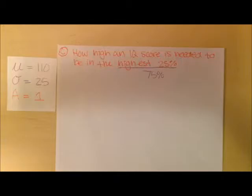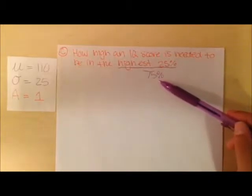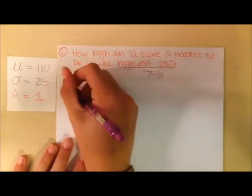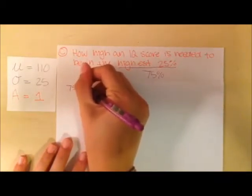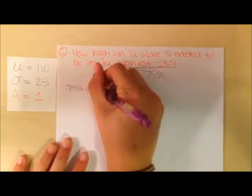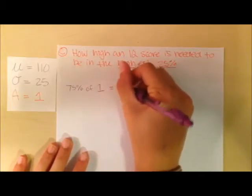C asks how high an IQ score is needed to be in the highest 25%. As you can see, I re-ordered this to say the 75th percentile or 75%. The first thing you should notice about part C is that we're actually beginning with a percent, not a given value. So for this problem, we're going to have to work backwards. It's asking for basically 75% of the distribution curve or 75% of 1. So we know that to be equal to 0.75.